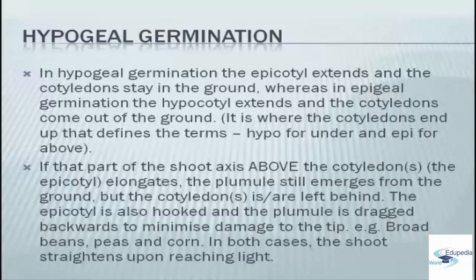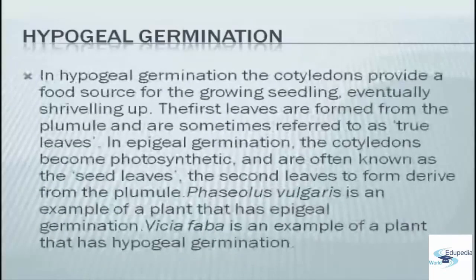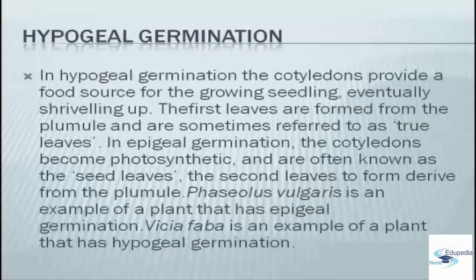In both cases, the shoot strengthens upon reaching light. In hypogeal germination, the cotyledons provide the food source for the growing seedling, eventually shriveling up. The first leaves are formed from the plumule and are sometimes referred to as true leaves.